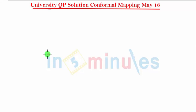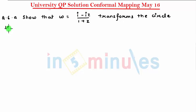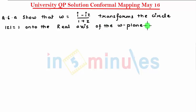Hello students, welcome to In 5 Minutes. We'll be starting with the Main 16 paper for conformal mapping. The question I am going to do is Question 6a: Show that w = (i - iz) / (1 + z) transforms the circle |z| = 1 onto the real axis of the w-plane. It's a six-mark question.